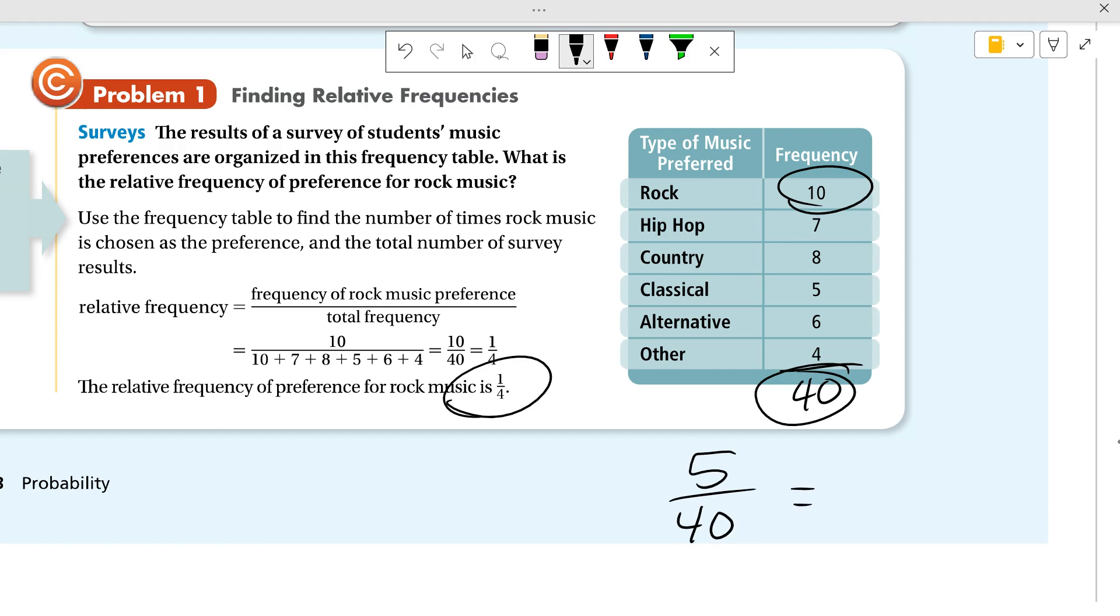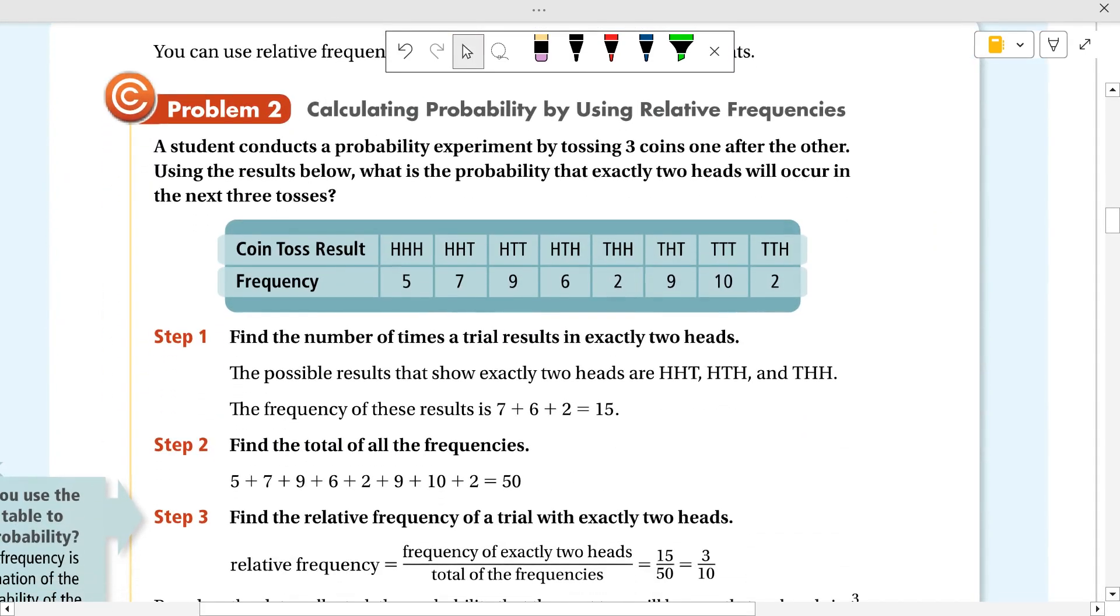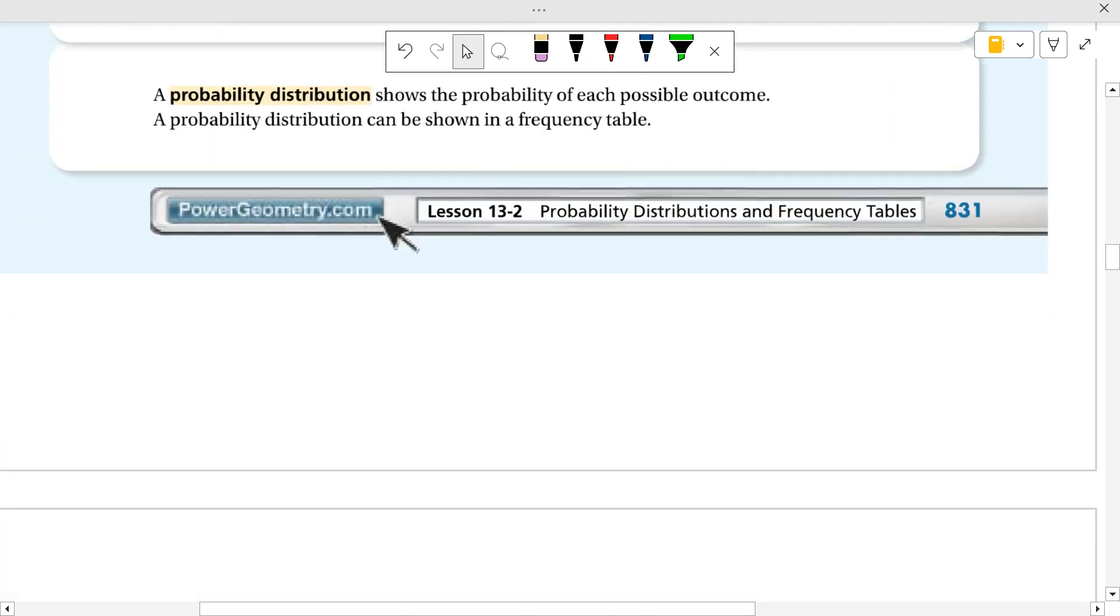Five over 40, and if we reduce that down that is one-eighth, which is 0.125 or 12.5 percent, and so on. Okay, so probability. A student conducts a probability experiment by tossing three coins one after another. The results are below. Using those results, what's the probability that exactly two heads will occur in the next three tosses? Which ones have exactly two? Well this one has exactly two, this one has exactly two, and this one has exactly two, which is 7 plus 6 plus 12 is 15 out of the 50 total tosses. 15 out of 50 is 3 tenths.